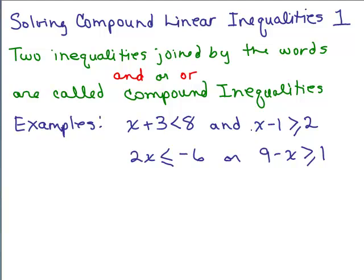So here are some examples: x plus 3 is less than 8, and x minus 1 is greater than or equal to 2. It's an inequality because we have a less than or greater than symbol, or you could have a greater than or equal. And it's compound because it has the word 'and' or 'or', so we have two separate ones put together.